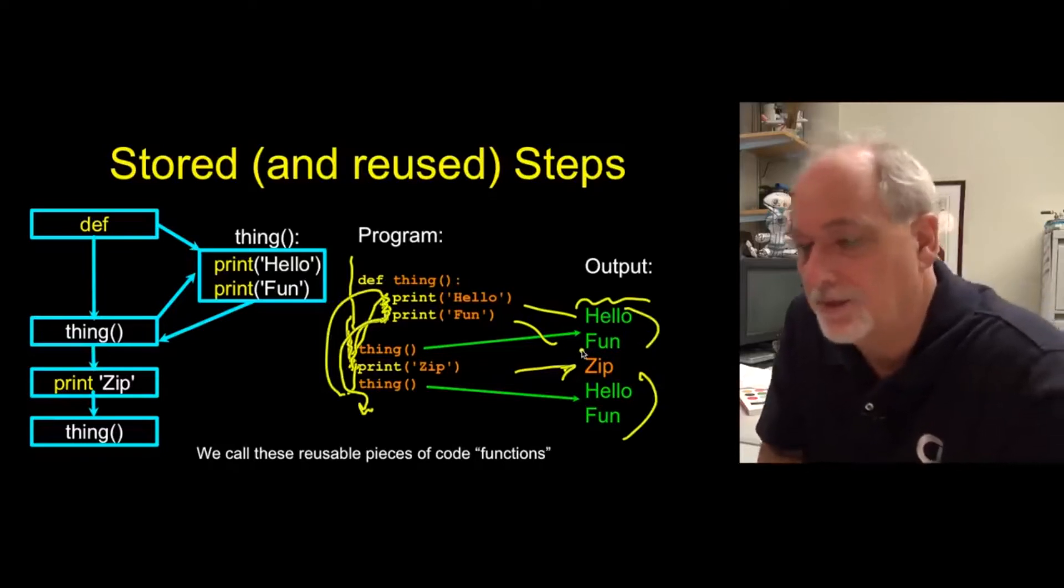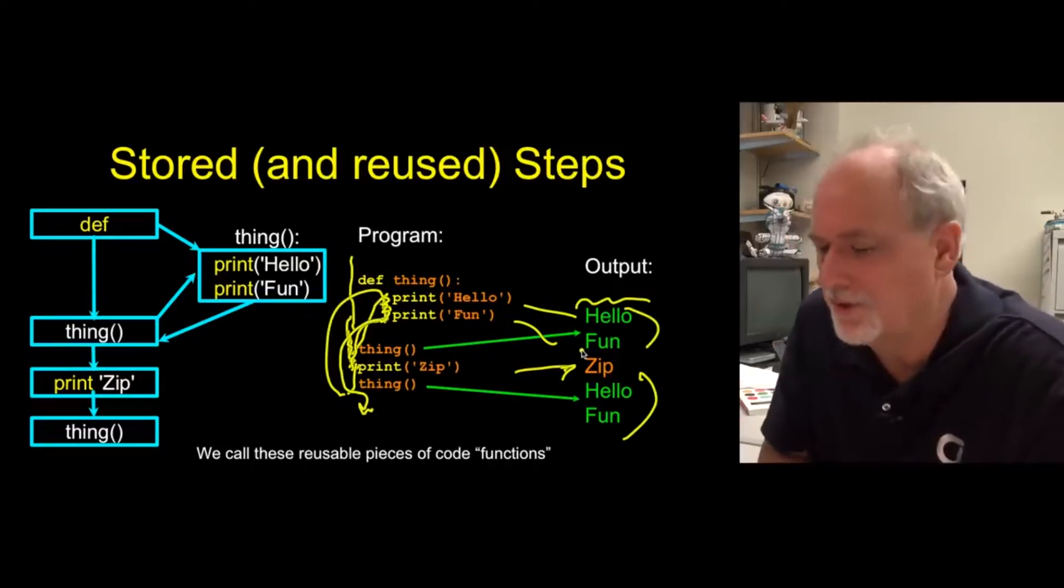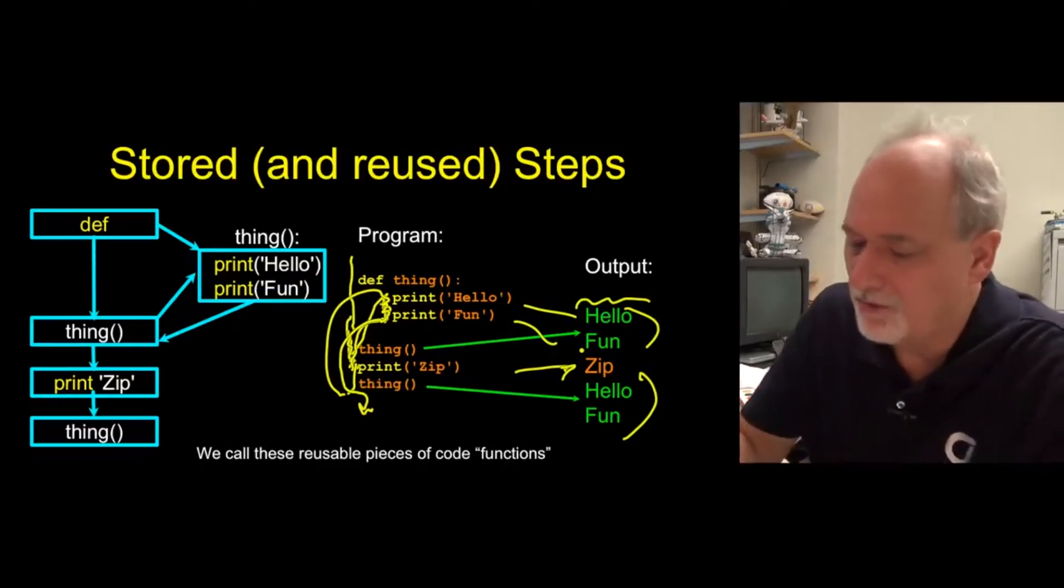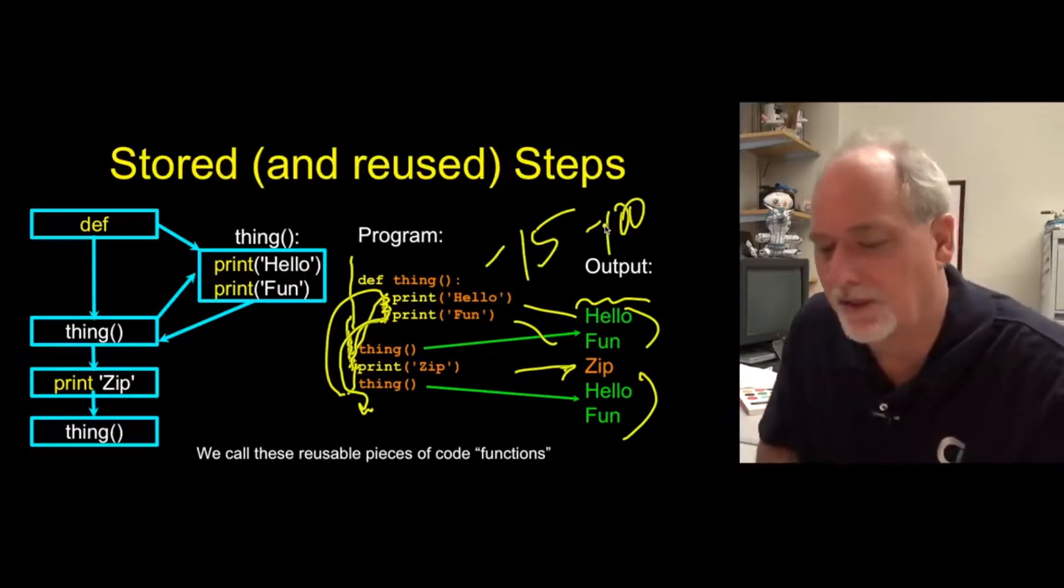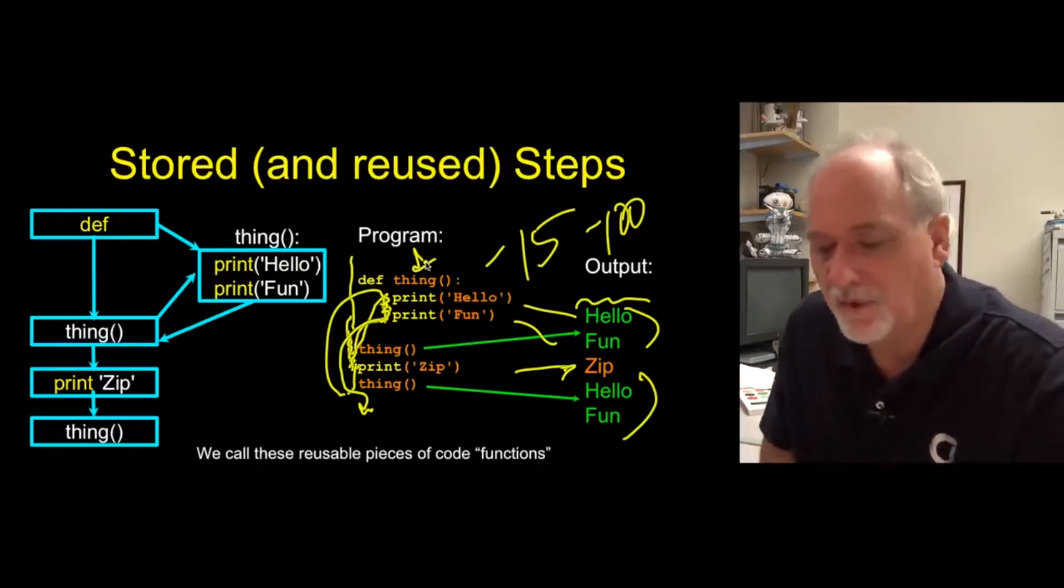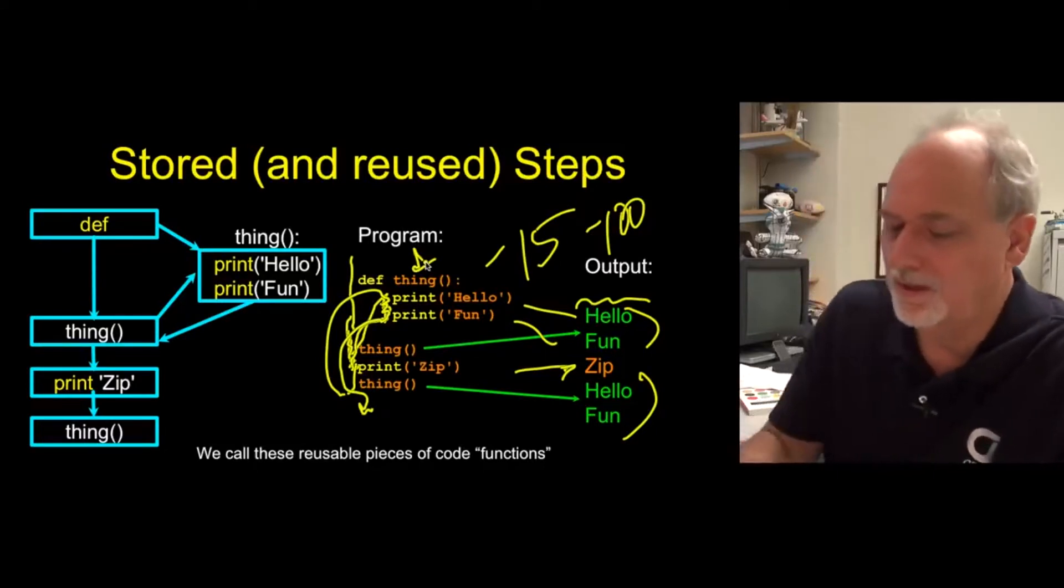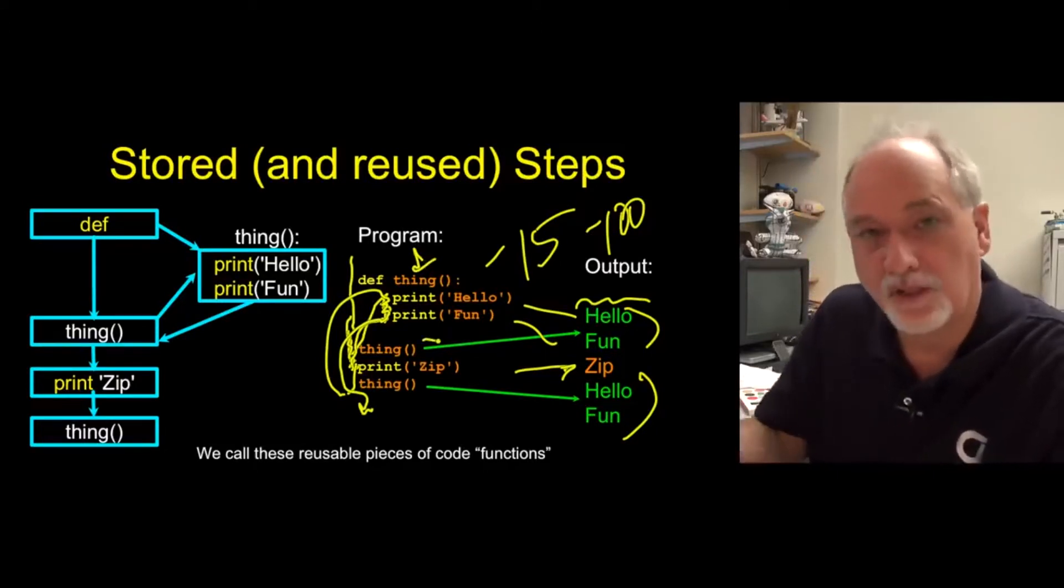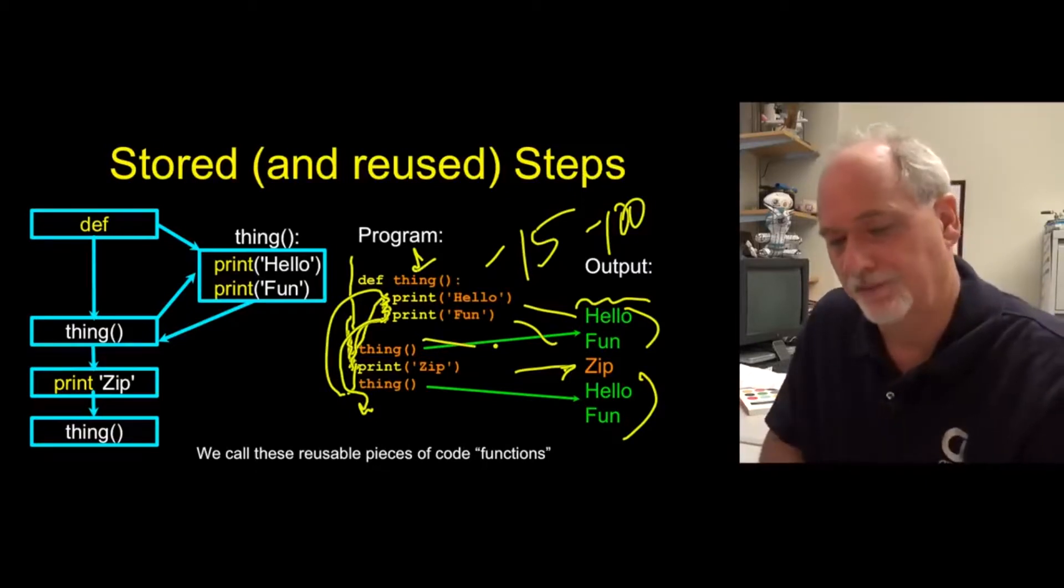And of course this is really simple so that I can fit it on a page. But you get the idea that I don't want to repeat. This might be 15 to 100 lines of code. And I don't want to type those over and over again. So I say, hey, store these in a name that I choose. And then when I invoke them, bring them back and then run them again. So that's the basic idea.